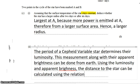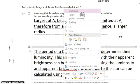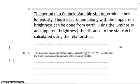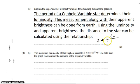Using the relationship. We know this relationship pretty well by now. We've used it a few times. It is apparent brightness equals luminosity over 4 pi d squared.